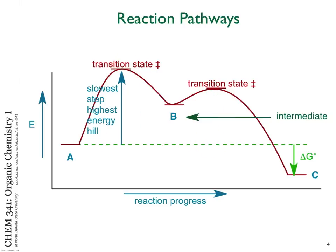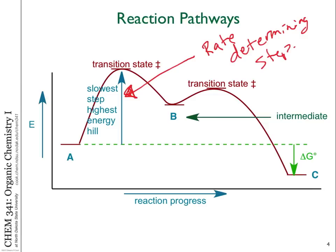Another term to remember: the highest energy barrier in an overall reaction mechanism — in this case it's the first step — is what we refer to as the rate-determining step. It's the slowest, and it's the one that dictates the overall rate of the reaction. What's going to be important for the reaction to proceed are the reactants involved in the highest energy step — the rate-determining step.